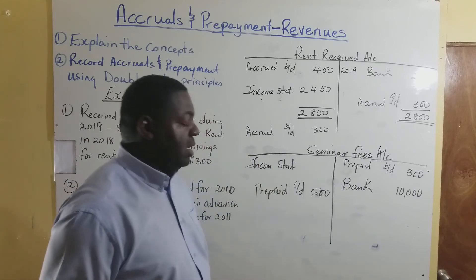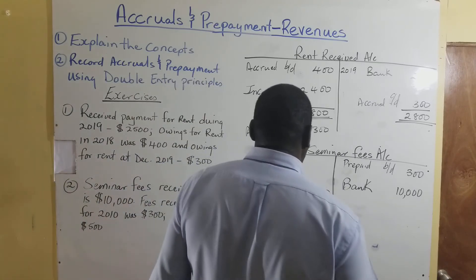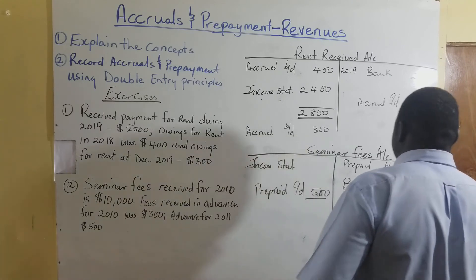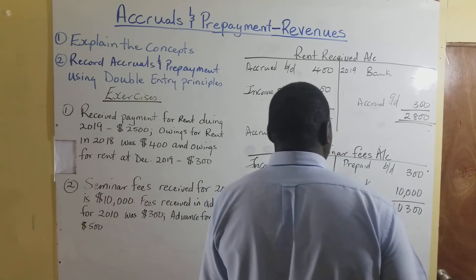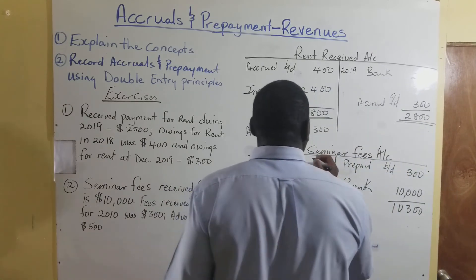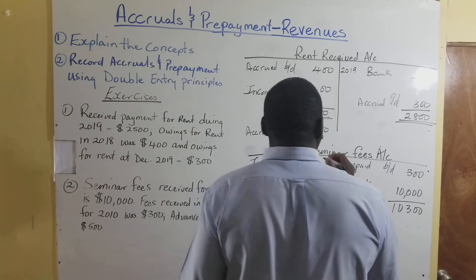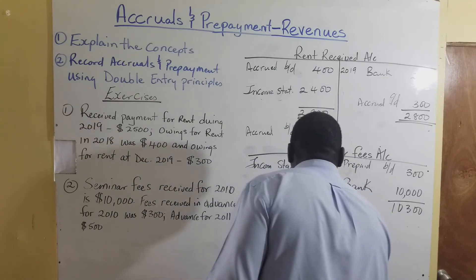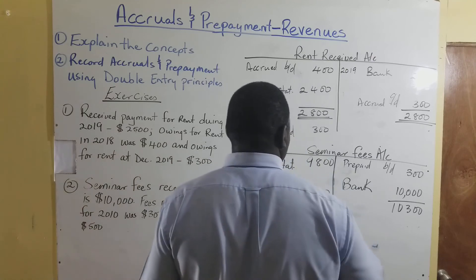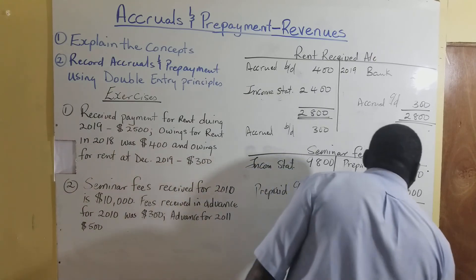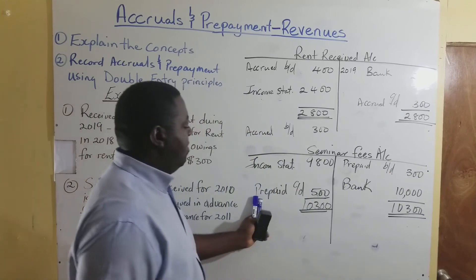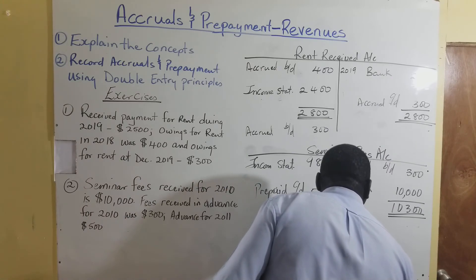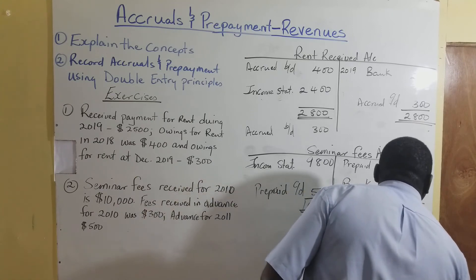The difference is going to the income statement as seminar fees. Adding the credit side: $10,000 plus $300 gives $10,300. So the income statement figure is $10,300 minus $500, giving $9,800. The prepaid CD of $500 comes over to become prepaid BD of $500 for the next period.